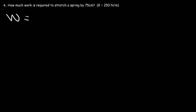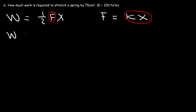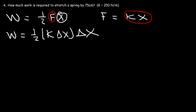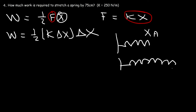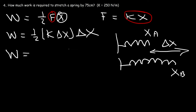The work required to stretch a spring is one-half times the maximum force times x. Based on Hooke's Law, F equals kx, so we replace F with kx. Keep in mind this x is really delta x — the change in position. So if the spring's natural length is at position xA and you stretch it to xB, delta x is xB minus xA. Therefore, the work required to stretch a spring is one-half k times delta x squared.